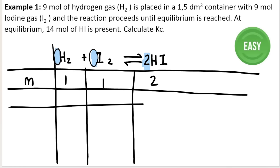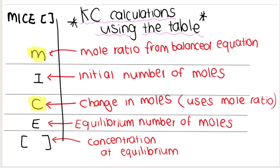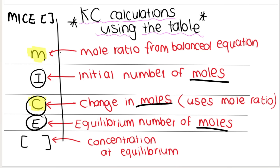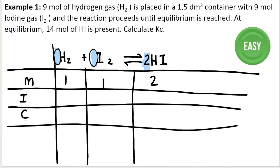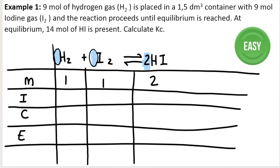Then I've got I, which stands for initial number of moles. It's very important to note that this is a mole table. I stands for initial number of moles, C is the change in moles, E is the equilibrium number of moles, and M is the mole ratio. The only row that is not moles is the last row, which is concentration at equilibrium — and square brackets means concentration.